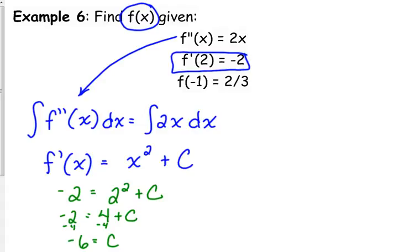So that says for this function, the first derivative, its particular solution, is x squared minus 6. We want to know f, so we have to integrate again.